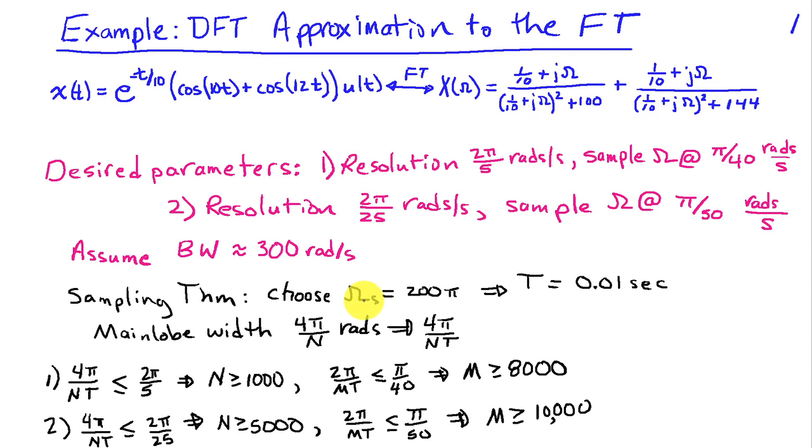The sampling theorem says that we need to choose omega sub s greater than twice the bandwidth of the signal. The bandwidth of the signal is 300 radians per second, so that would be 600 radians per second. We're going to choose a sampling frequency of 200π, which is greater than 600 radians per second, and that leads to a sampling interval of 1/100 of a second. For our resolution, the main lobe width is 4π/n radians, which translates to 4π/(nΔt) radians per second. In the first case, where our resolution was 2π/5, we can do the math and find out that n has to exceed 1,000 when Δt is 1/100. In the second case, where our resolution is 2π/25, we need an n 5 times as big.